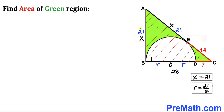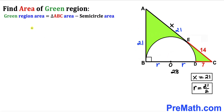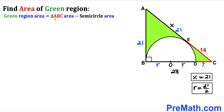So AB = 21 units. The green region area equals the area of the big right triangle ABC minus the area of the semicircle. Our next task is to calculate both of these values.